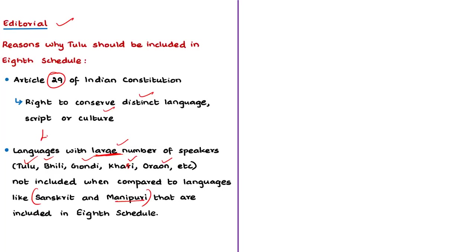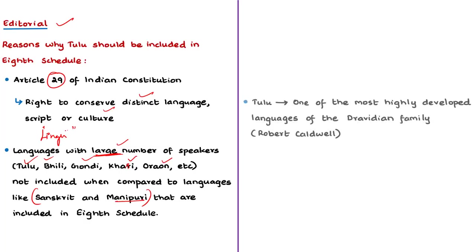The author quoted a book written by Robert Caldwell, who did research on Dravidian languages. In this book, Robert Caldwell called Tulu one of the most highly developed languages of the Dravidian family. So the author argues that Tulu must be protected under the Eighth Schedule.